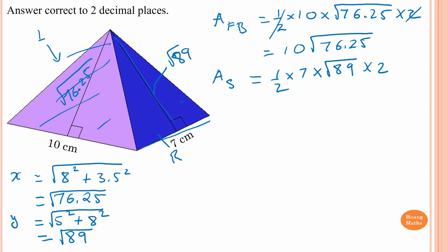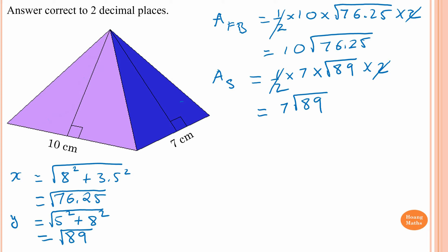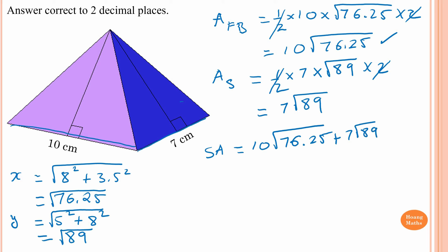Simplifying the left and right sides gives 7√89. The base is a rectangle, so the area of the base is 7 × 10 = 70. Now for the total surface area: 10√76.25 (front and back) + 7√89 (left and right sides) + 70 (base).